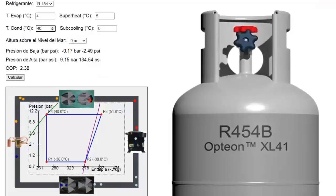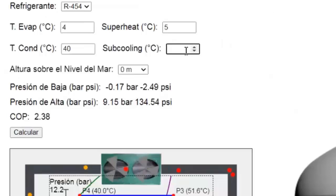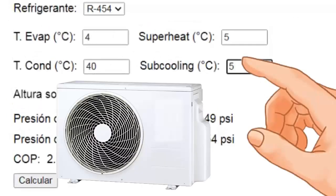Now, let's select a subcooling value of 5 degrees Celsius. Subcooling is the decrease in temperature of the refrigerant while in liquid phase at the condenser outlet, which improves system efficiency.